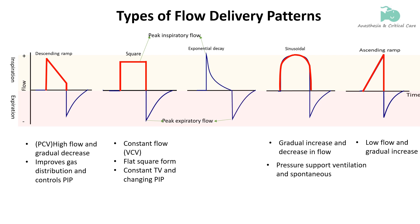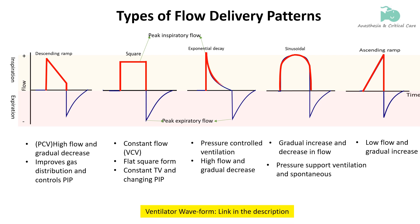The exponential decay flow pattern, seen in pressure-controlled ventilation, starts with a high flow rate that gradually decreases as the lungs fill. This pattern helps distribute air more evenly and reduces peak airway pressures, making it gentler on the lungs. Unlike the descending ramp where flow declines linearly, in exponential decay the flow decline is gradual, giving it a curved appearance.